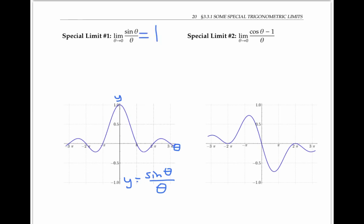The second limit here on the right is also a zero over zero indeterminate form, since as theta goes to zero, cosine theta goes to one, so cosine theta minus one goes to zero. But again, looking at the graph, we have some evidence to suggest that as theta goes to zero, our expression is also going to zero.